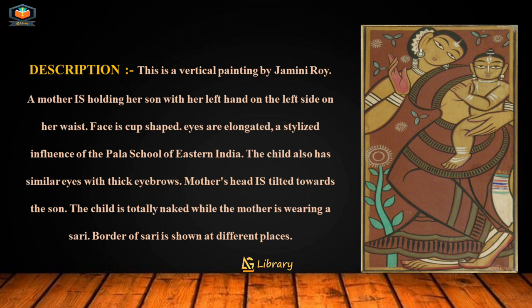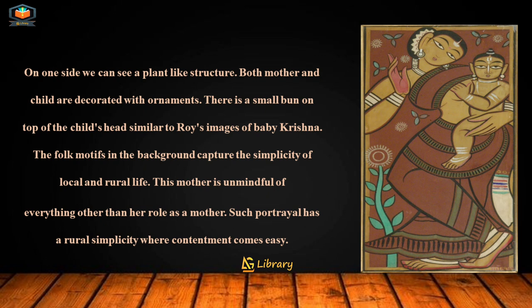The border of the saree is shown at different places. On one side we can see a plant-like structure. Both mother and child are decorated with ornaments. There is a small bun on top of the child's head, similar to Roy's images of baby Krishna. The folk motifs in the background capture the simplicity of local and rural life.